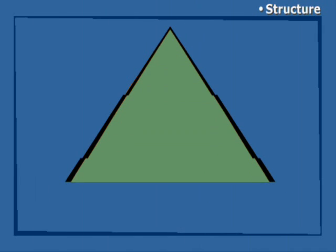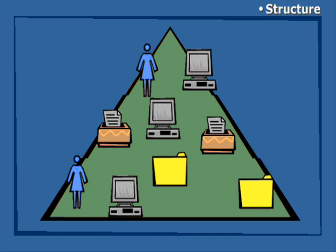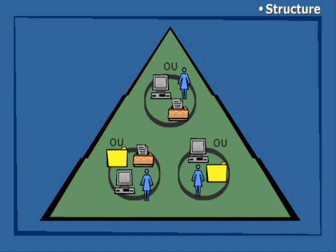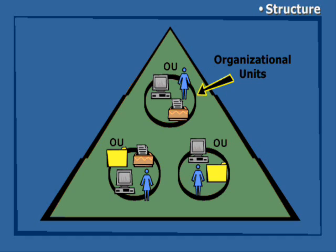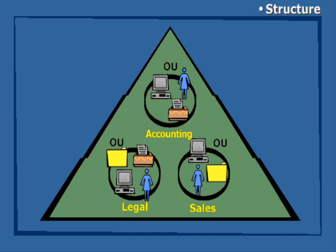Now let's look at how Active Directory is structured. Objects are maintained in a domain, which is the basic unit of organization and security in Active Directory. Within a domain, objects can be organized into logical containers called organizational units, or OUs. Using OUs, you can create a hierarchy that duplicates the structure of your organization. Even more importantly, you can delegate some administrative responsibilities for these smaller units.